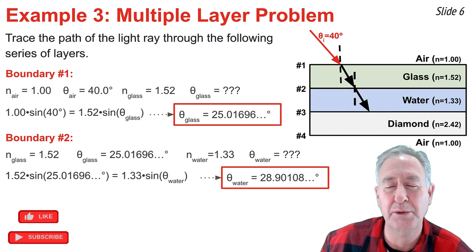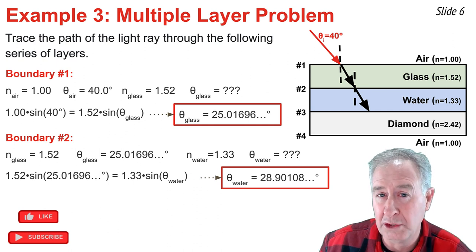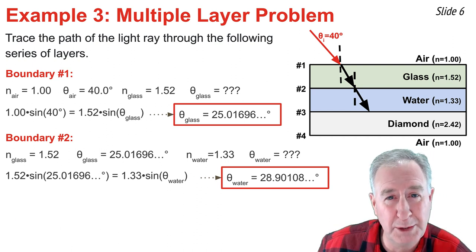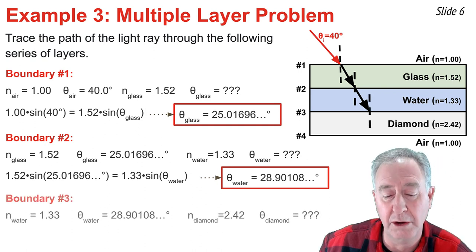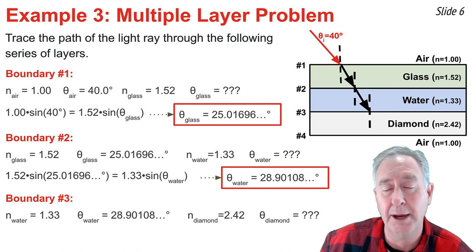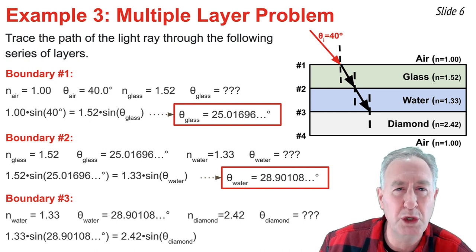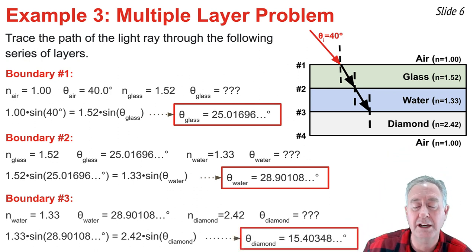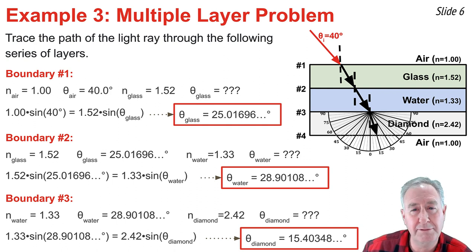Now I'm ready for boundary three, the boundary between water and diamond. The angle of incidence in water approaching boundary three equals the angle of refraction at boundary two — alternate interior angles of parallel lines. I know the n of water, the angle in water, and the n of diamond. Substituting into Snell's Law, evaluating the left side, dividing by 2.42, and taking the inverse sine, I get about 15 degrees as the angle of refraction in diamond. I draw the refracted ray about 15 degrees from the normal and move on to boundary four.